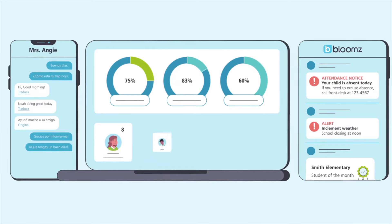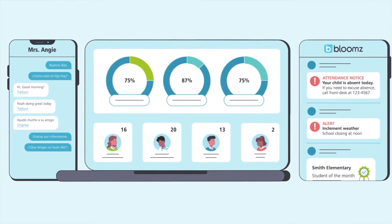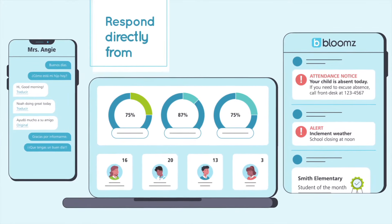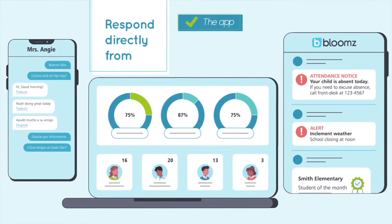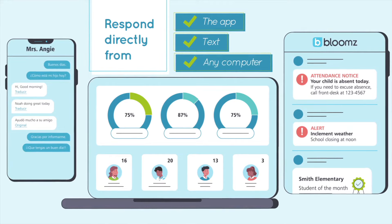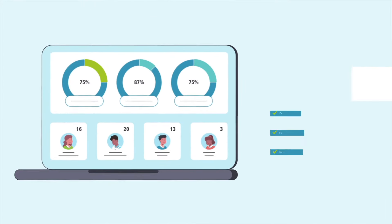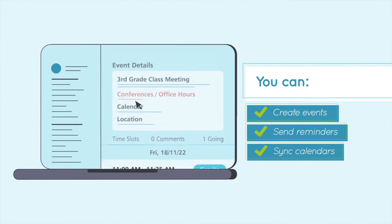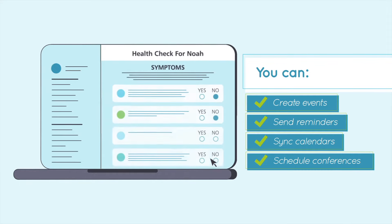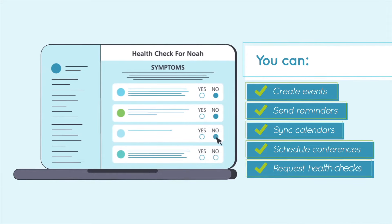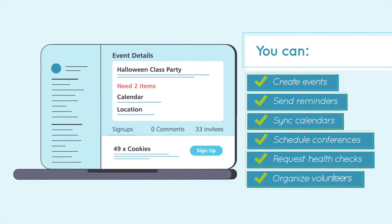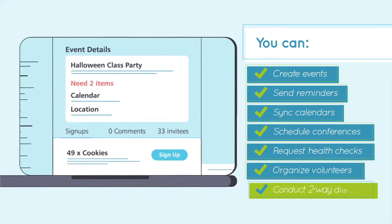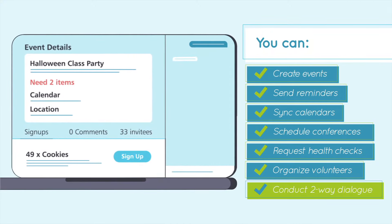Blooms covers behavior interactions and everything in between. Parents can respond directly from the app, text, or any computer. You can create events and reminders, sync calendars, schedule conferences, request health checks, organize volunteers, or create a two-way dialogue with families, making communication relevant and actionable.